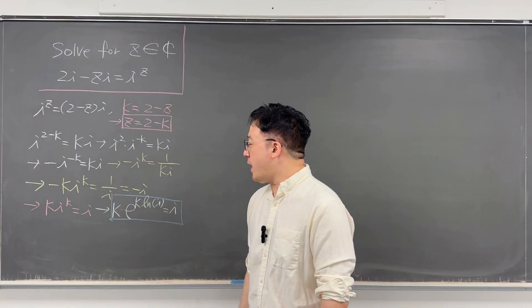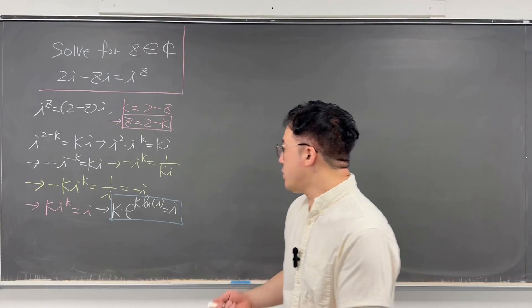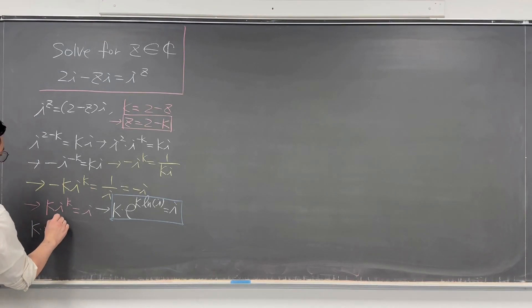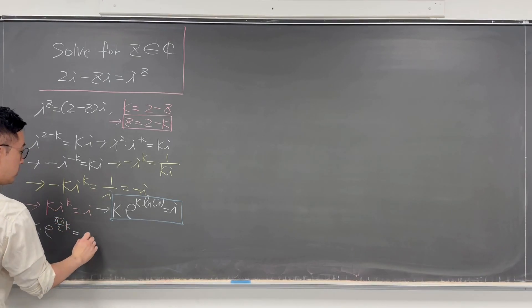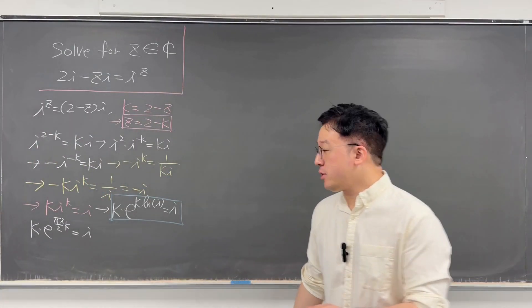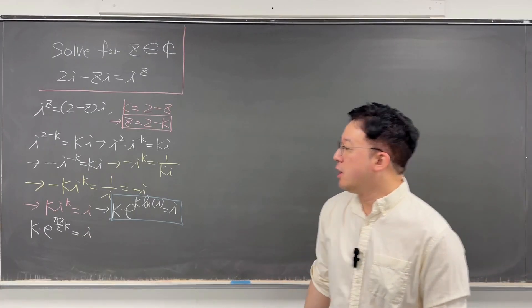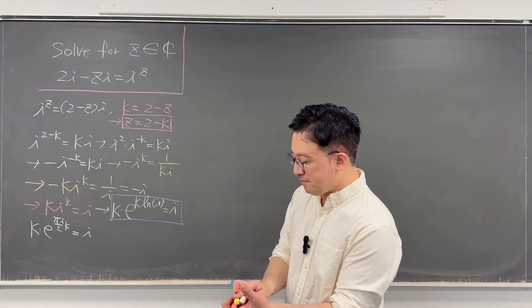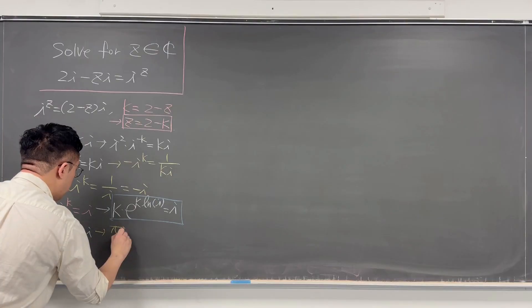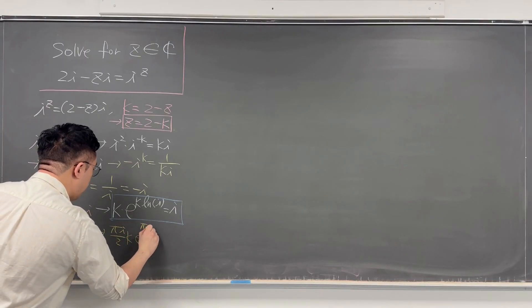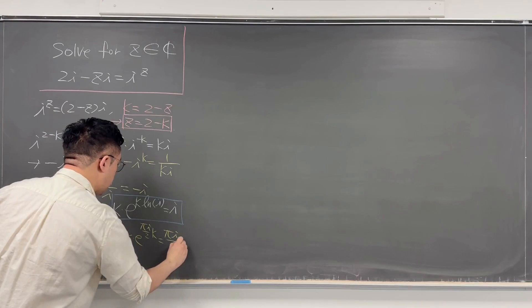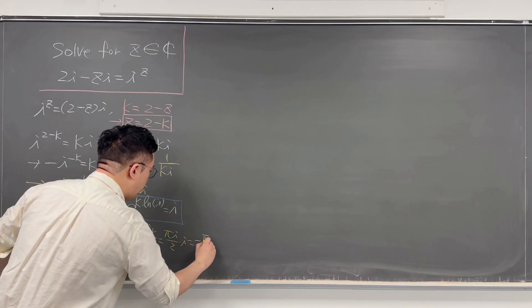Let me rewrite ln(i) as πi/2. So the equation is now: k times e to the power of πi/2 times k equals i. Then just one more step before we apply the Lambert W function: multiply πi/2 to both the left and right-hand sides. So it should look like π/2 times k times e to the power of πi/2 times k equals πi/2 times i, which equals negative π/2.